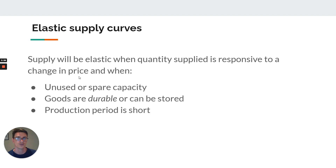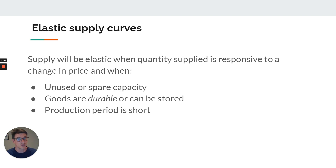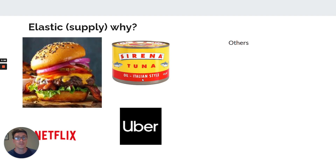Finally, if the production period is short — if you can produce things really quickly and get them to market — that's likely to mean that you can respond to an increase in price, as opposed to taking a long time. So our three factors are the same, we just reversed them: we've got an inelastic and an elastic supply curve. Pause now and work out why these four products would have an elastic supply curve using the factors I just described.